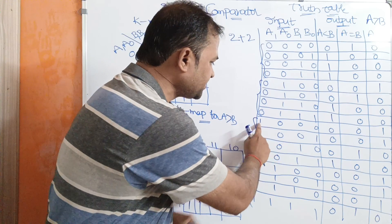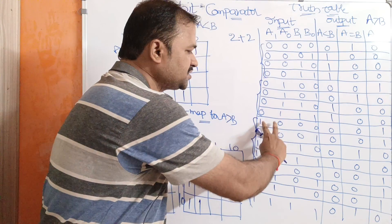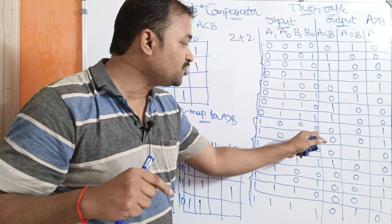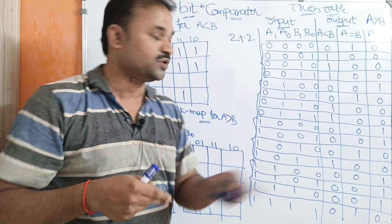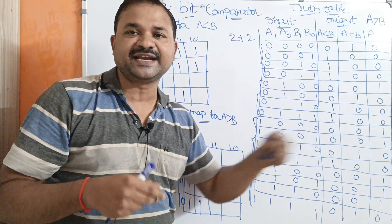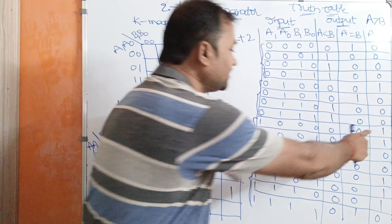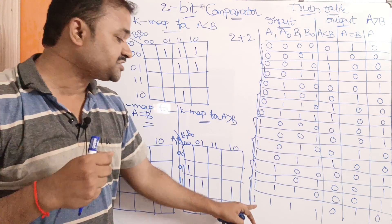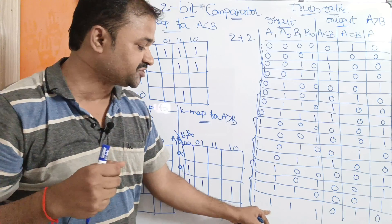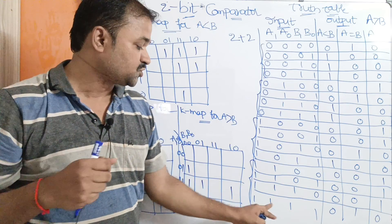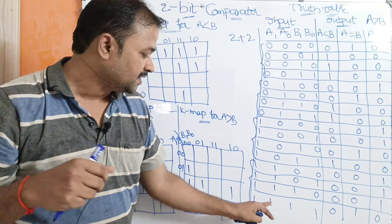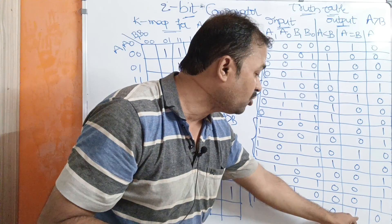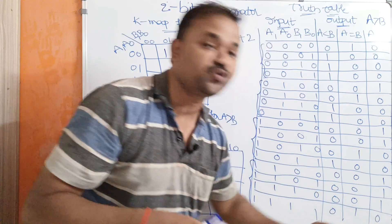Let us take another combination: A is 1,0 and B is 0,0. Here 1,0 means decimal number 2, and 0,0 means decimal number 0. Since 2 is greater than 0, we can say A is greater than B, so A greater than B output is 1 and the remaining two are 0. For the last combination, A is 1,1 and B is 1,1, both equal to decimal 3. Both are equal, so A equal to B output is 1 and the remaining two columns are 0.